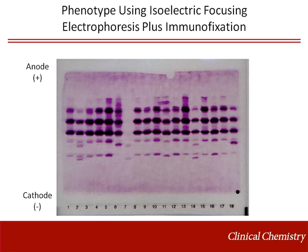This is an example of what an AAT isoelectric focusing electrophoresis gel looks like. Each variant produces multiple bands, which is thought to be a result of post-translational modifications. In the first lane, we have the MM variant, or what is generally thought of as the wild type. The blue arrows point to lanes with patients who are heterozygous or homozygous for the Z allele, which is distinguished by the presence of cathodal bands. The orange arrow points to lanes with patients heterozygous for the S allele, mainly distinguished by its unique bands.